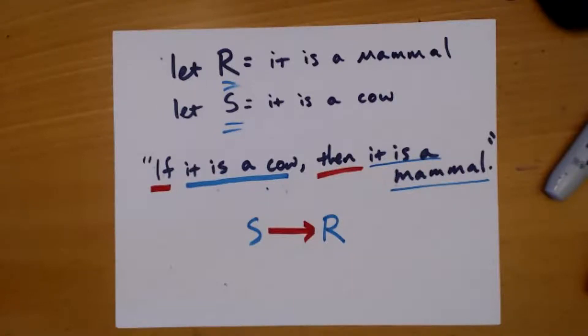Really, all you're doing is looking at your sentence, picking out the pieces, and substituting them — kind of like you did in algebra. Every time you saw an X, you replaced it with a three. You're just substituting for pieces.